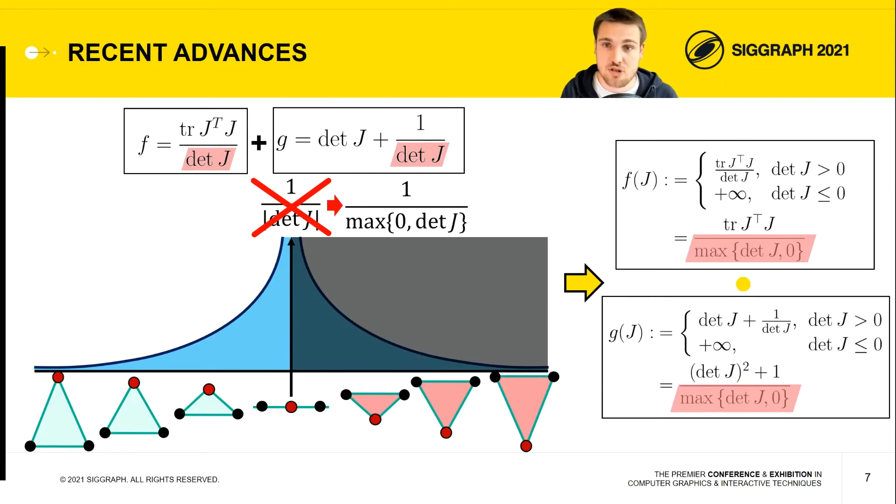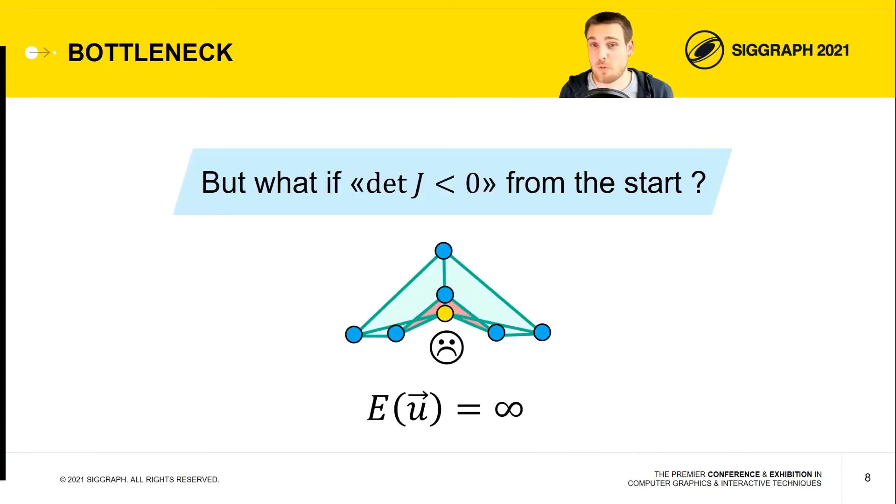We can see that those two energies depend on the determinant of the mapping. To prevent any foldover, we put the energy as infinite if the determinant is negative. As a notation, we replace the determinant with max of zero and the determinant. But while this is a very good energy to optimize if we have a good initialization with a positive determinant, we might not be able to get such a mapping at the beginning.